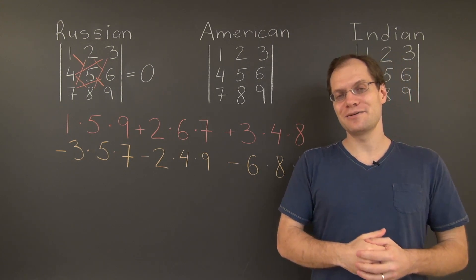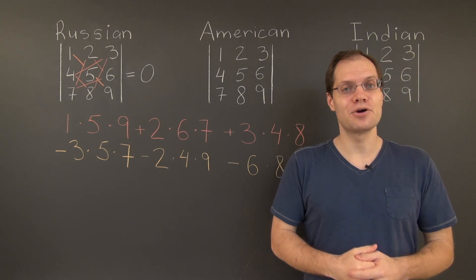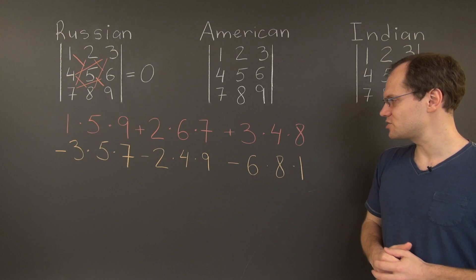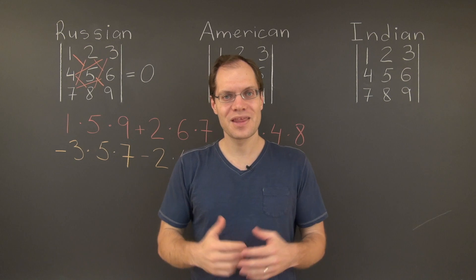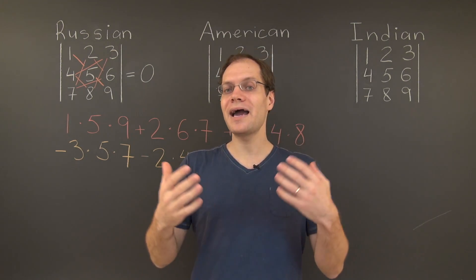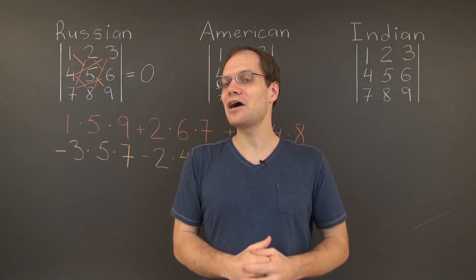Now on to the American approach. The American approach will produce the same six terms, but it will save you from having to identify the Russian patterns. It will simplify them by unwrapping them. Here's how it works.